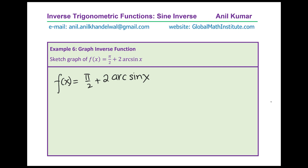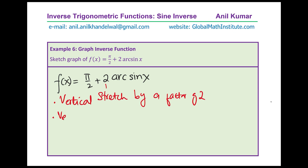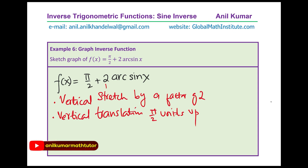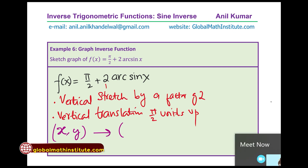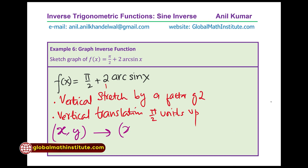What you notice is there are two transformations: first, a vertical stretch by a factor of 2, and second, a vertical translation of pi by 2 units up. These two transformations act on the graph of arc sine x. If the coordinate points are (x, y) in the original graph, then x remains x, the y values get multiplied by 2, and then we add pi by 2.